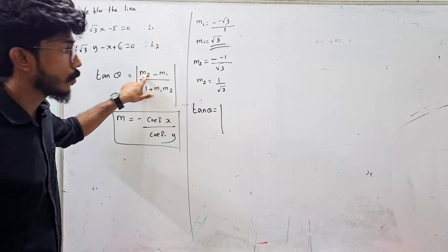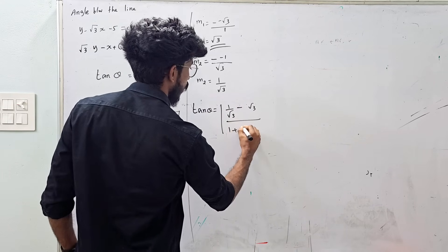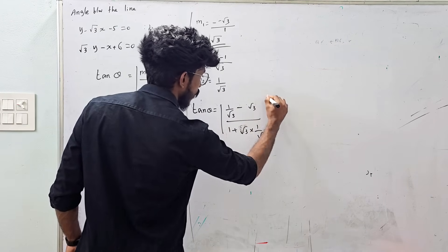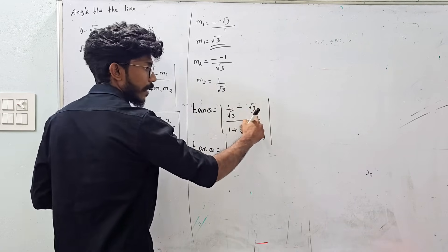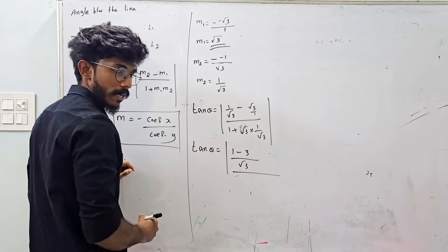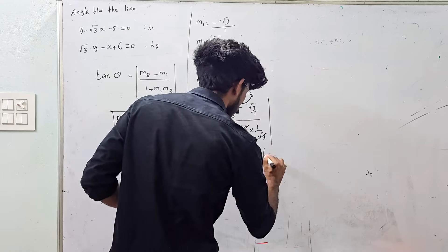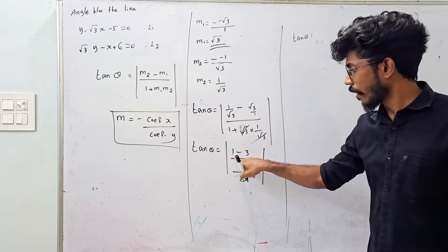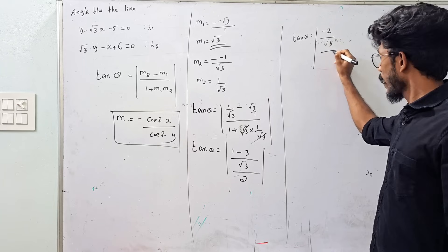tan θ equals modulus of m2 minus m1 divided by 1 plus m1 times m2. So m2 is 1 by root 3, minus m1 which is root 3, divided by 1 plus root 3 times 1 by root 3. This gives tan θ equal to: the numerator is 1 minus 3 divided by root 3, which is minus 2 by root 3, and the denominator is 1 minus 3 by root 3 into 1, giving 2 by root 3.